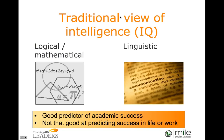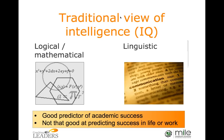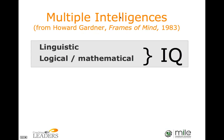If we define intelligence broadly as the ability to learn and solve problems, other competencies are also needed. You may already be familiar with Howard Gardner's idea of multiple intelligences. Howard Gardner is a developmental psychologist who challenged the view that intelligence is a single entity — instead he argues that there are multiple intelligences which develop relatively independently of each other.